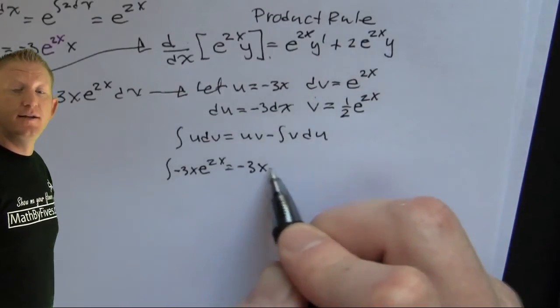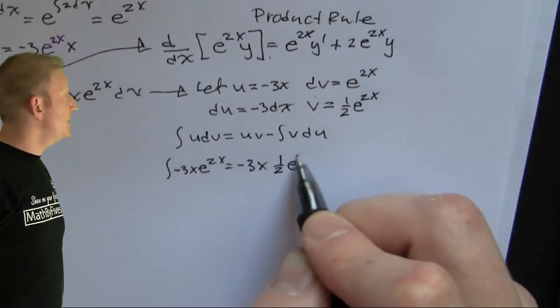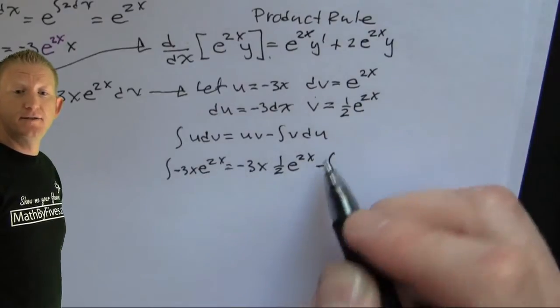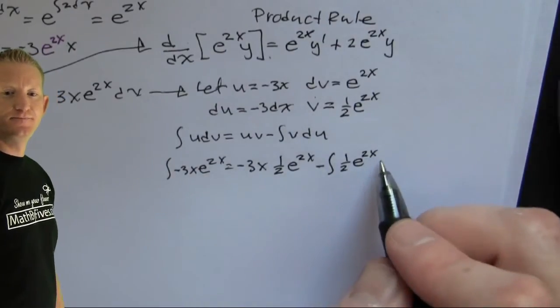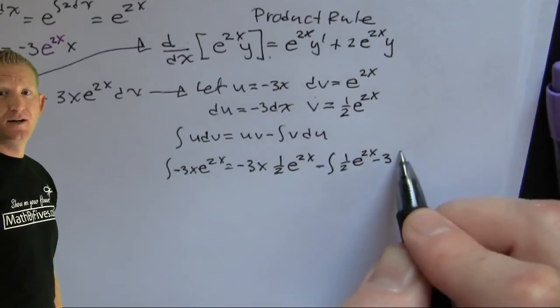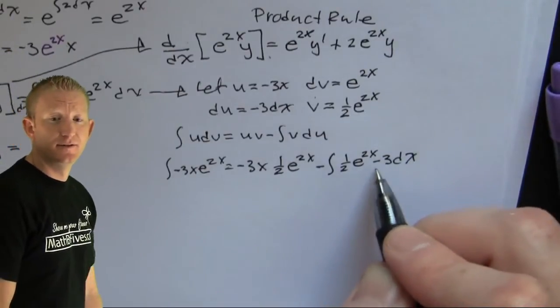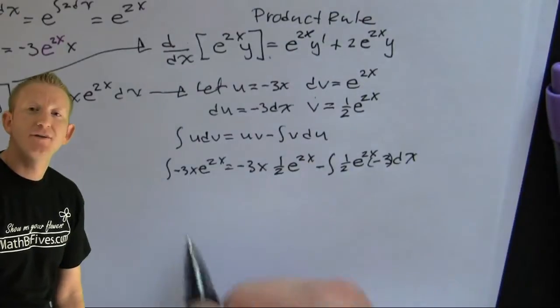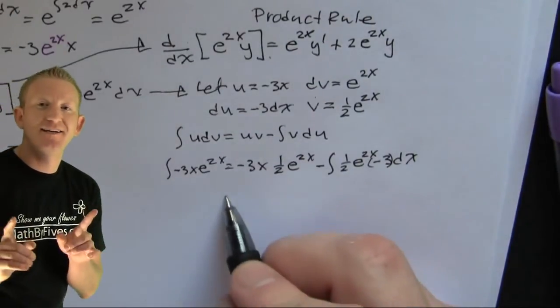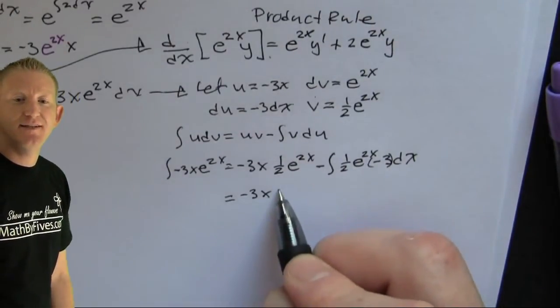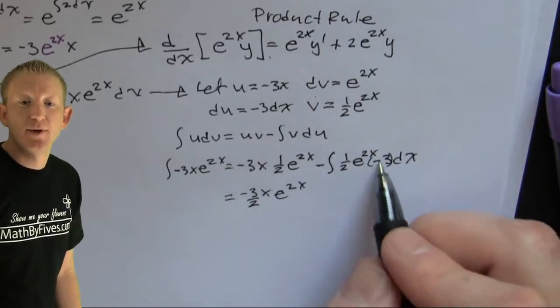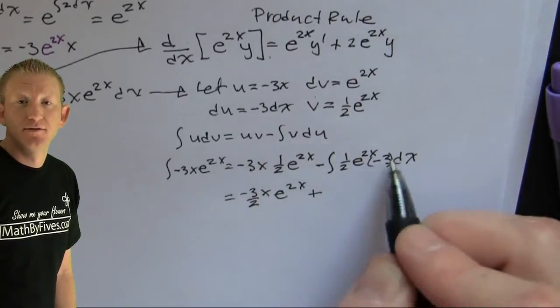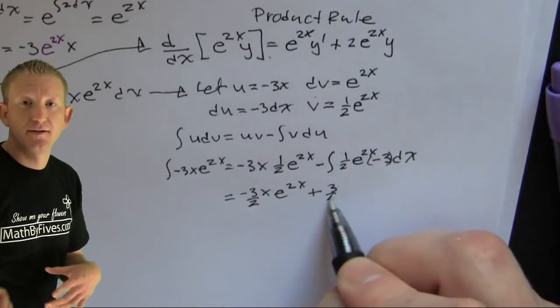That's the integral of u dv is uv minus the integral of v du. Okay. Sure. Is that better? Oh, I'm going to have to go, no, that's okay. I can integrate that other piece. Right, that's e to the 2x, right? Then my u is 2x and my du is 2. So then I got to divide.